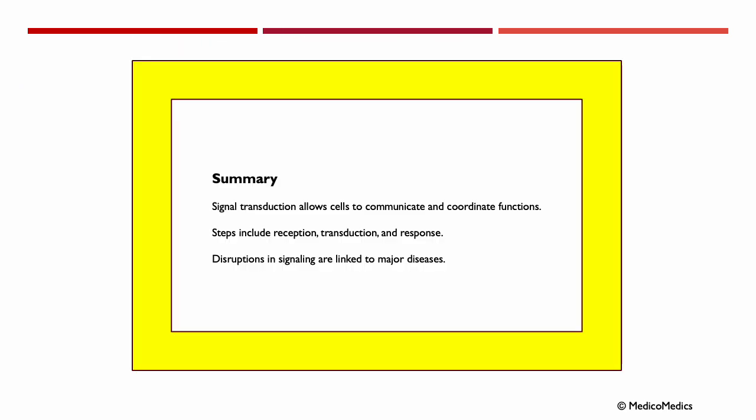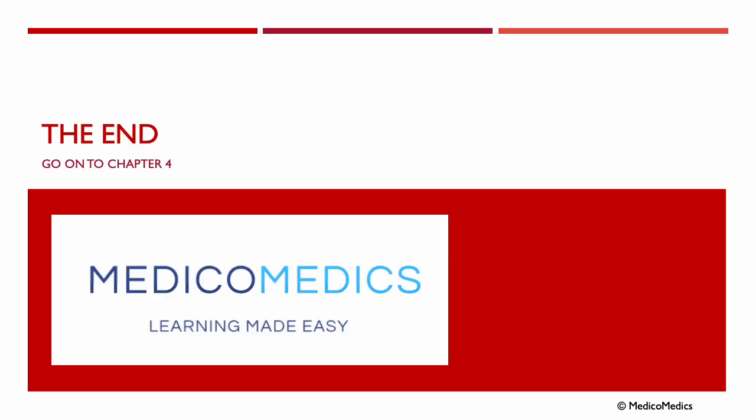In summary, signal transduction allows cells to communicate and coordinate functions. Steps include reception, transduction, and response. Disruptions in signaling are linked to major diseases. And that's the end of chapter 3. Continue now to chapter 4.